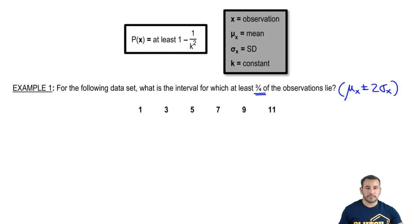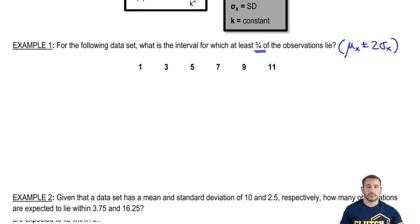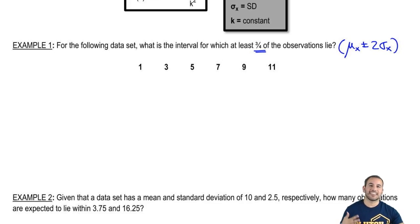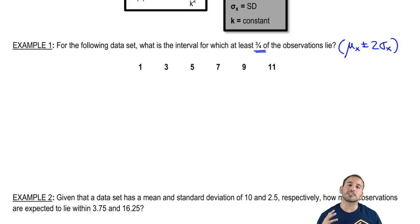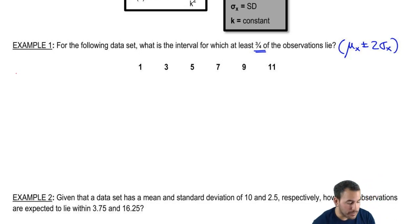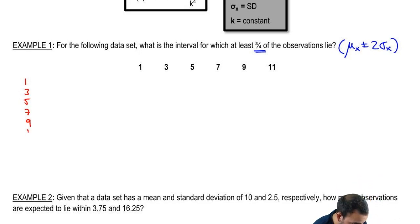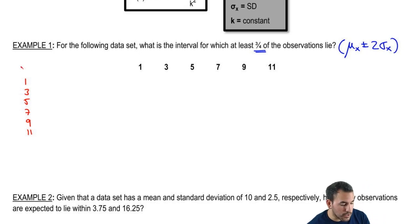Do we know the mean? No, we just have this data set. Do we know the standard deviation? No, we just have the data set. So we're going to have to find these — this is just a recap of how to get the mean and standard deviation. We have: 1, 3, 5, 7, 9, and 11 — those are each individual observations.